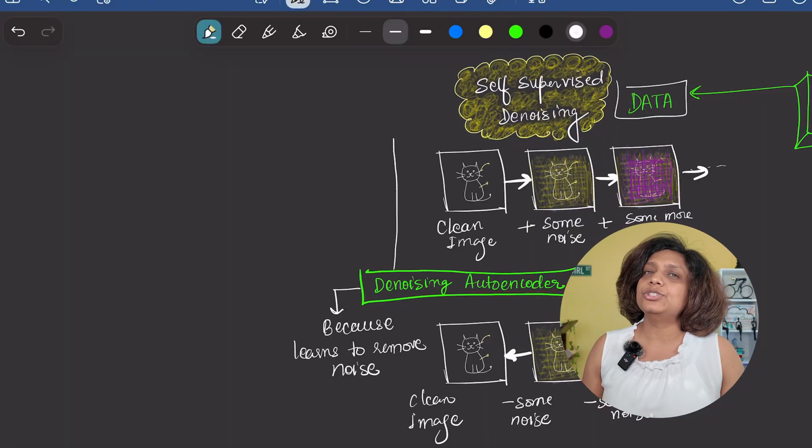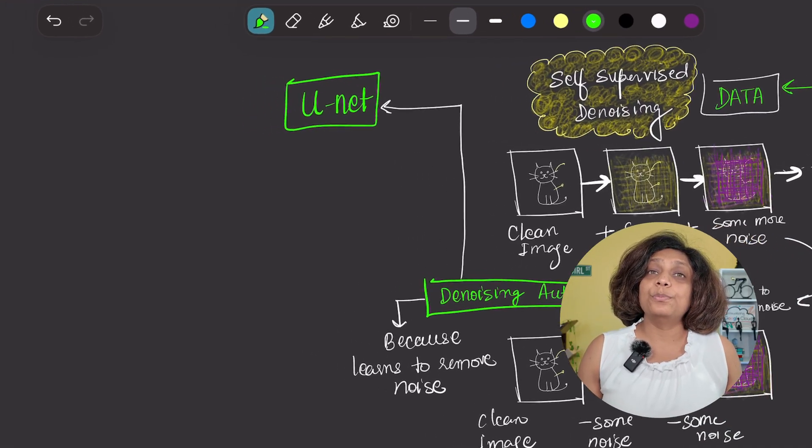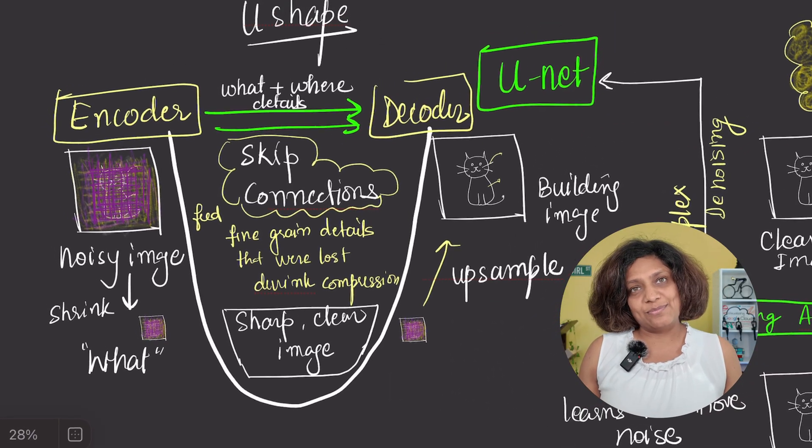Because it learns to clean or denoise an image, it's called a denoising autoencoder. No human labeling is needed in this case. So what kind of neural network is powerful enough to do this complex denoising? Most diffusion models use a special architecture called a U-net.